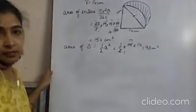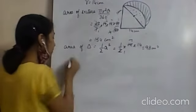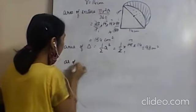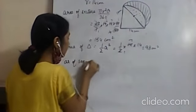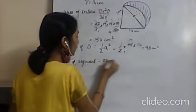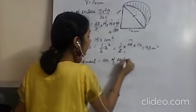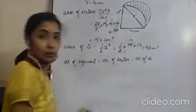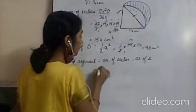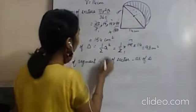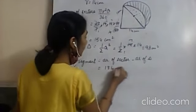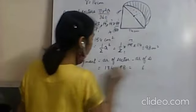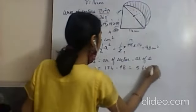Area of the triangle is 98 cm². Area of segment equals area of sector minus area of triangle: 154 minus 98 equals 56 cm².